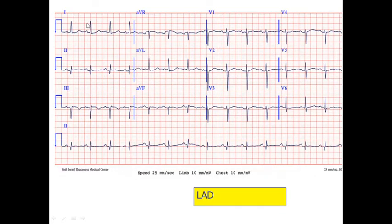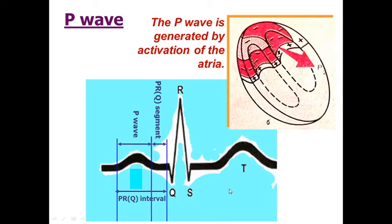Next, you see the biggest R on the 1st lead. Also, the 1st lead is predominantly positive and AVF is predominantly negative — positive on the 1st lead, negative on AVF gives us left axis deviation.